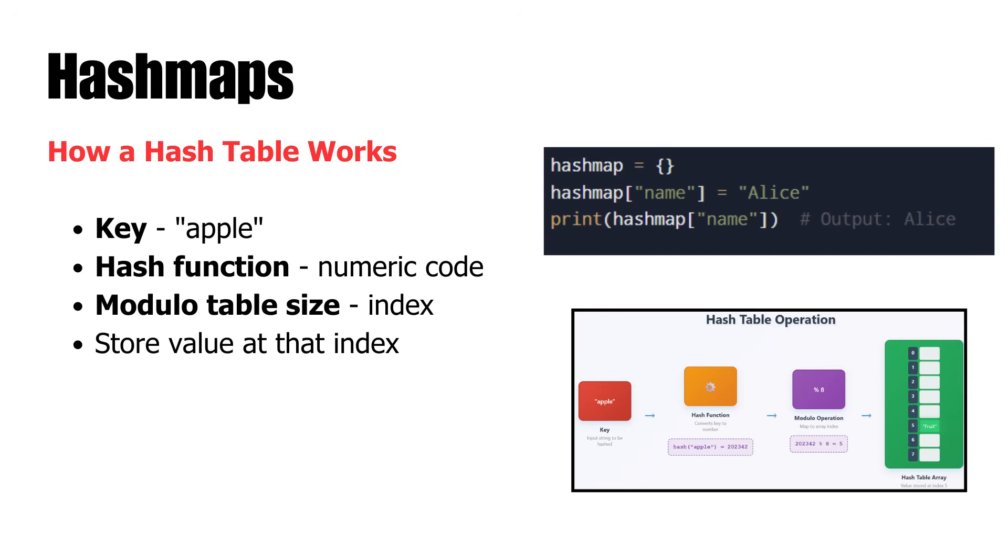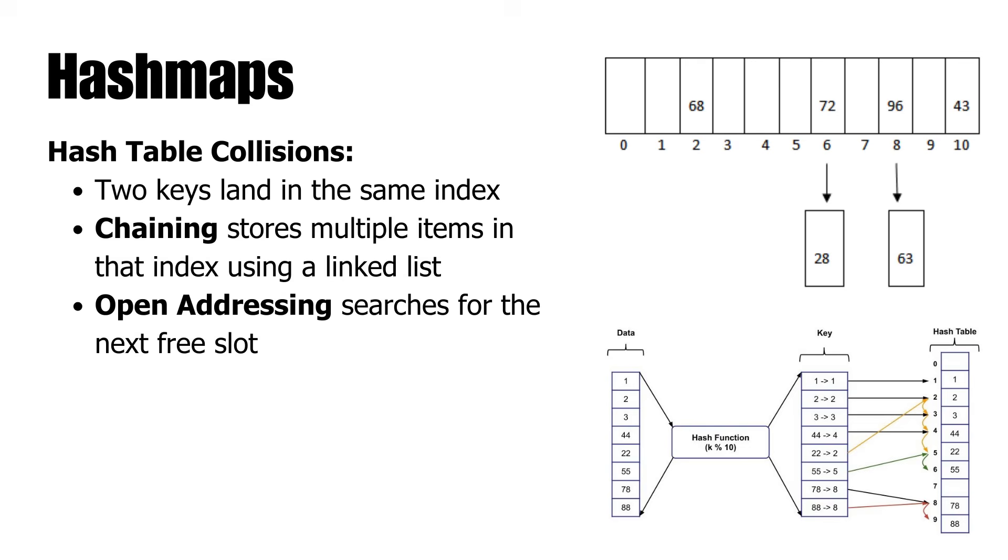Issues arise when two keys map to the same index. This is known as a collision. Two well-known approaches for handling collisions are chaining, wherein multiple elements are kept at the common index using a list or link structure, and open addressing, which searches for a different available index using methods like linear probing or double hashing. Although the typical time complexity of operations is O(1), it can degrade into O(n) in the worst scenario with too many collisions. Maintaining a low load factor and using a good hash function is essential to achieve maximum performance.